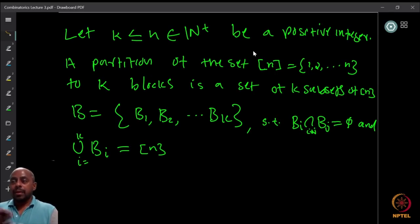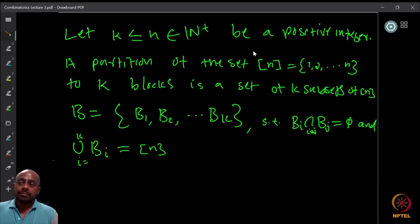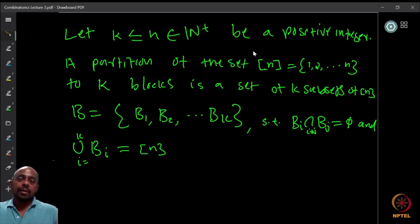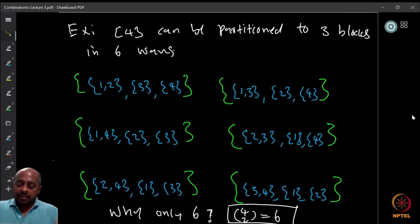We want to find the number of possible such partitions — the number of partitions of the set [n] into k blocks with this property. This definition makes it very clear that the earlier question about the children's sleepover party was precisely this same combinatorial problem. Now here is an example: if you take the set {1, 2, 3, 4} you can partition it into three blocks in six different ways.